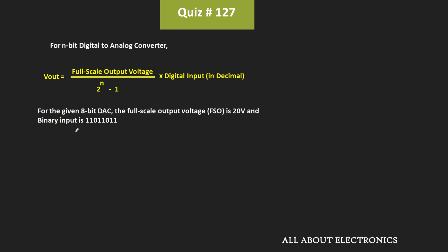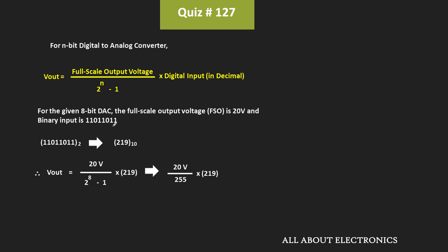The binary input is 11011011, which in decimal corresponds to 219. That means the output voltage of the DAC is equal to 20V divided by 2 to the power 8 minus 1, times 219. This 2 to the power 8 minus 1 is equivalent to 255. Therefore, the output voltage of the DAC will be equal to 17.17V, which is roughly equal to 17V.